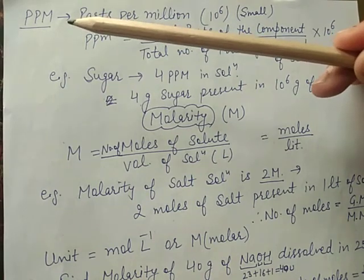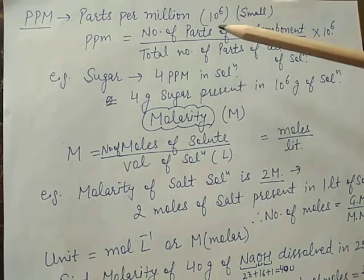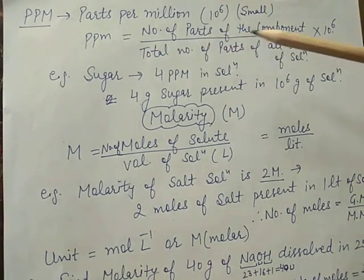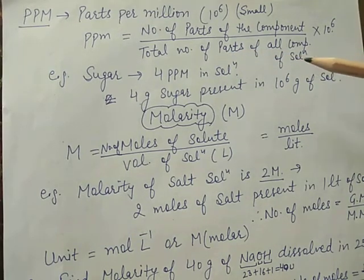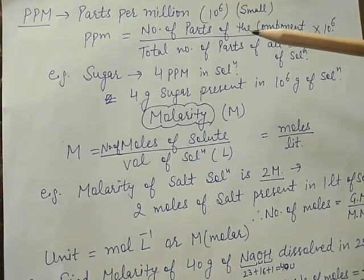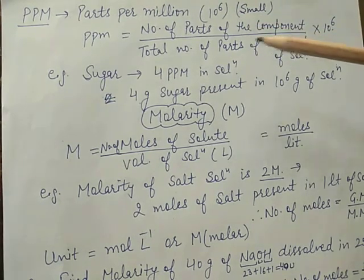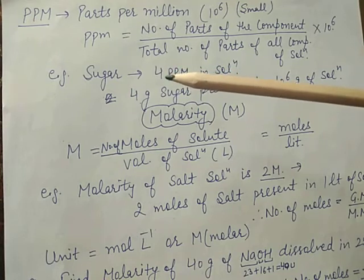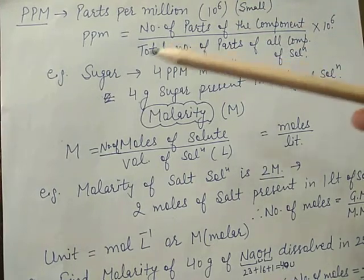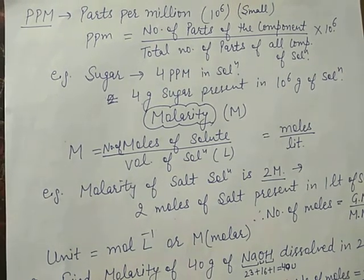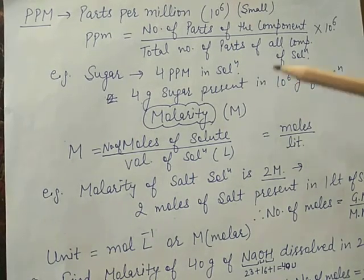Next topic is PPM — parts per million. Million means 10 to the power 6 (ten lakh). PPM is used when a solute is present in very small quantity. PPM equals number of parts of the component divided by total number of parts of all components of the solution, multiplied by 10 to the power 6. For example, sugar present at 4 ppm means 4 gram of sugar in 10⁶ gram of solution.